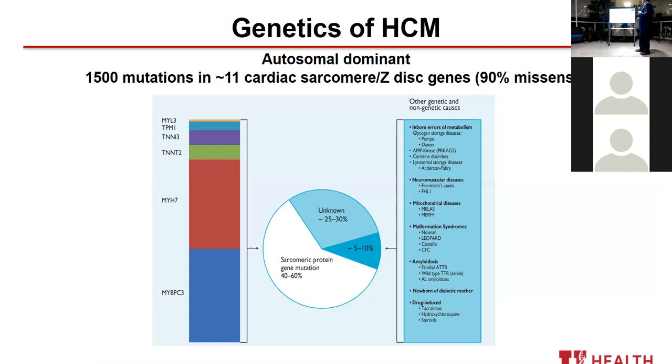What degree of hypertrophy is significant? In adults, a wall thickness of 15 millimeters or more. If you have a relative with HCM, 13 millimeters will do, or a patient with a known genetic mutation — 13 millimeters qualifies. Briefly on prevalence: most papers and textbooks cite 1 in 500, but this is based on very old data from echo registries. With advanced imaging including echo and cardiac MRI, the prevalence has increased, now reported as high as 1 in 200.